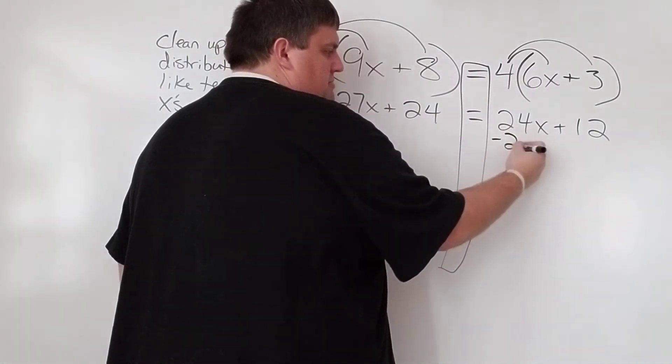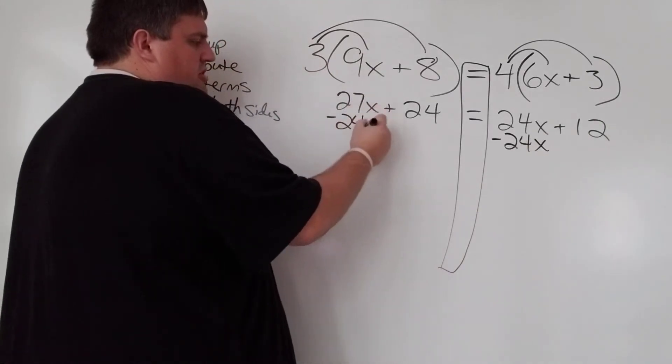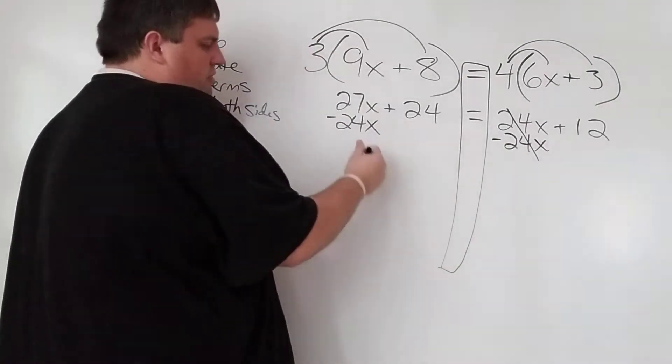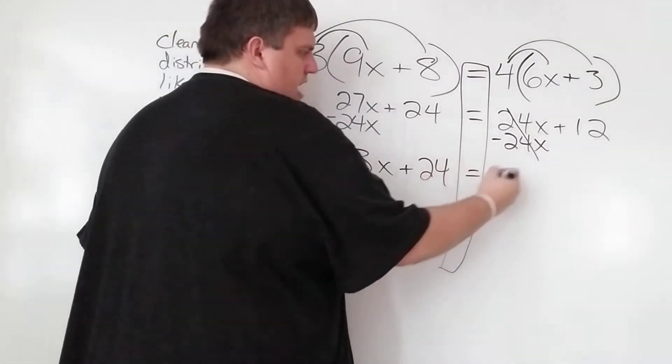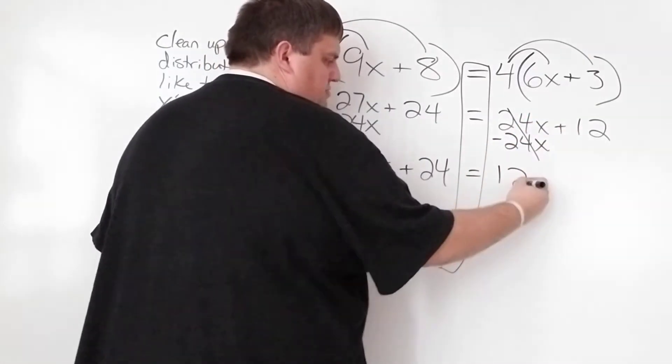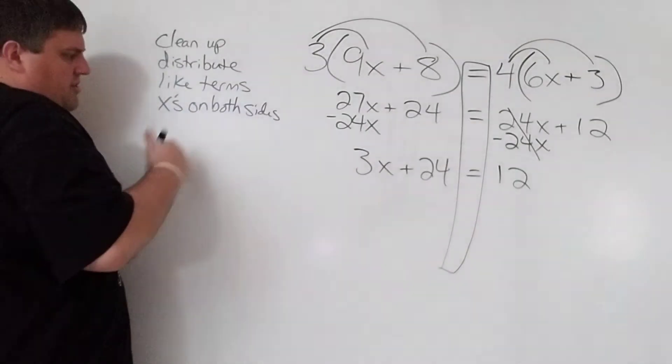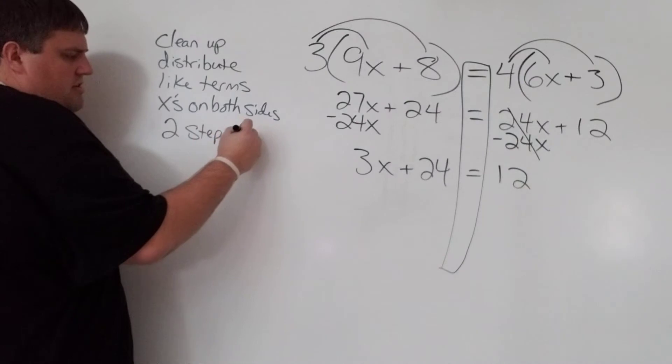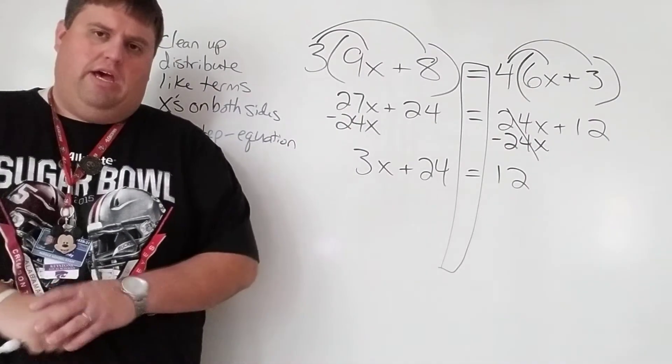My choice would be to get rid of 24x because it's smaller. So to get rid of 24x, I'm going to subtract 24x from both sides. Make sure you match it up with the like terms. Over here, 27x minus 24x is 3x. And over here, the 24x is gone. We just have 12. If you do these things like this in this order, after that, it should be a two-step equation.